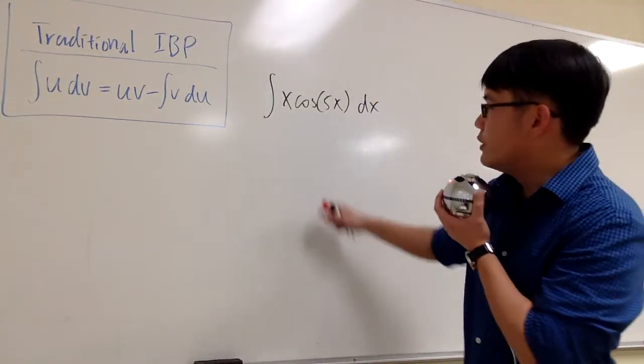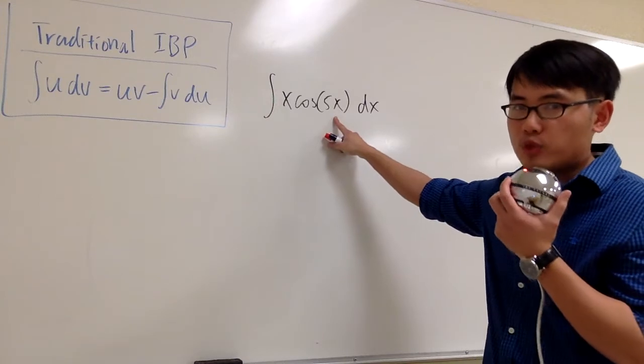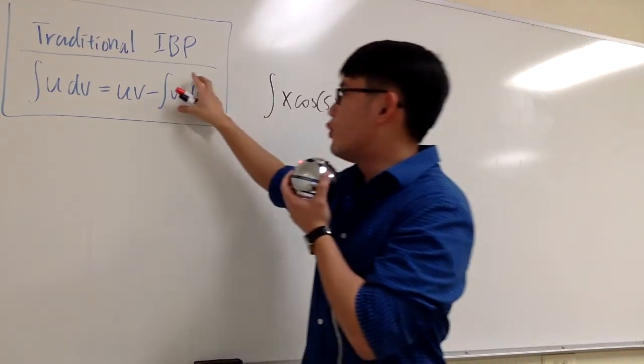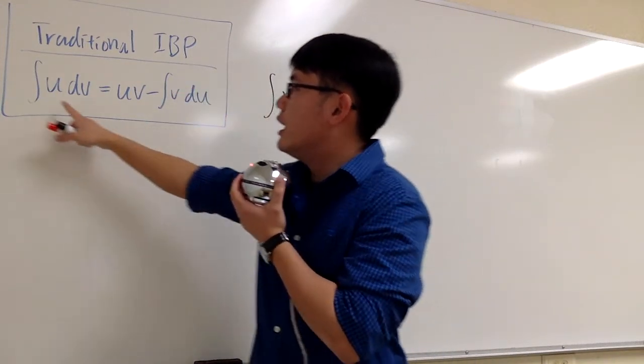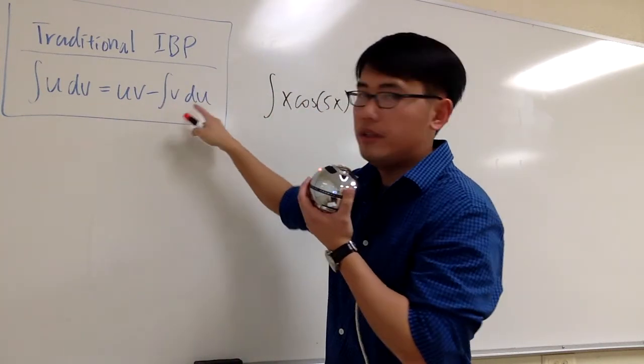Let me show you a much faster way to do the integral of x times cosine of 5x. We still have to do integration by parts. The traditional formula for integration by parts is the integral of u dv equals uv minus the integral of v du.